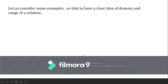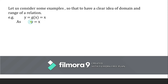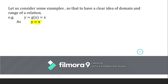Let us consider some examples to have a clear idea of domain and range. Consider the relation Y = G(X) = X. Here Y is related to X, where X is the independent variable and Y depends upon X.